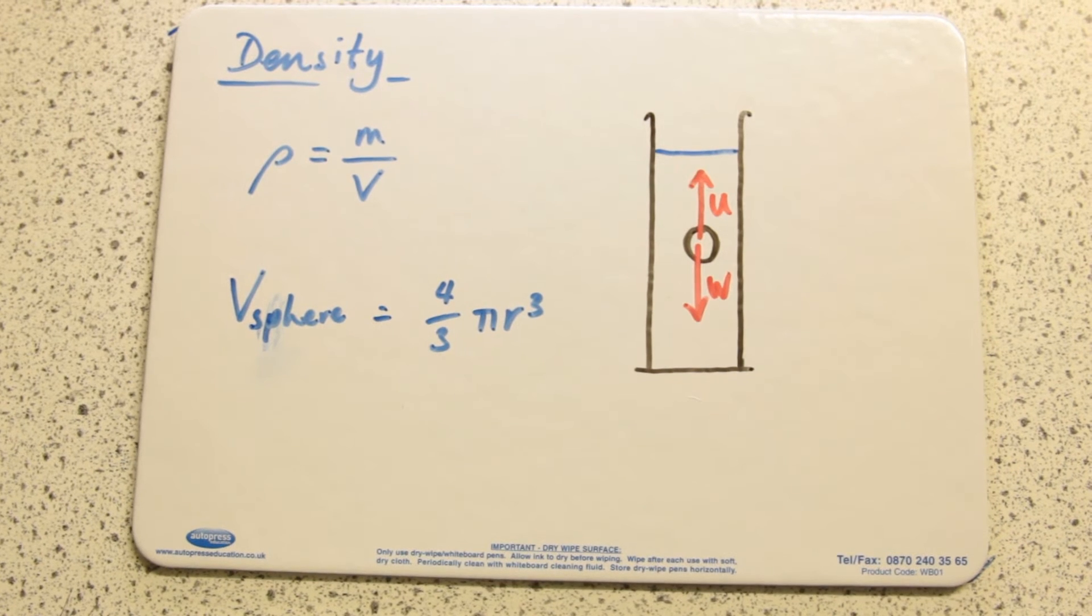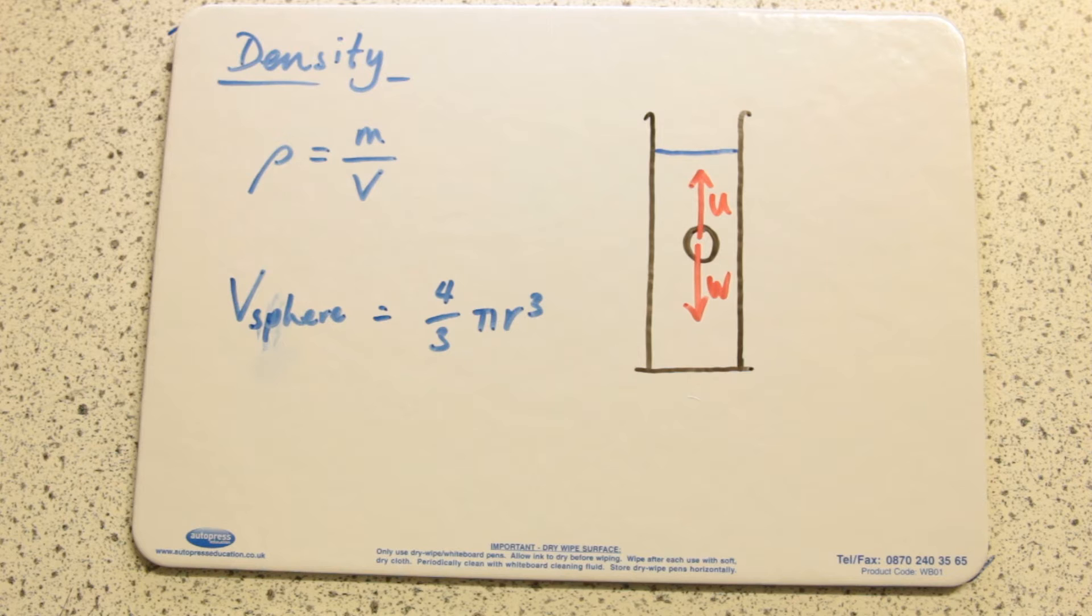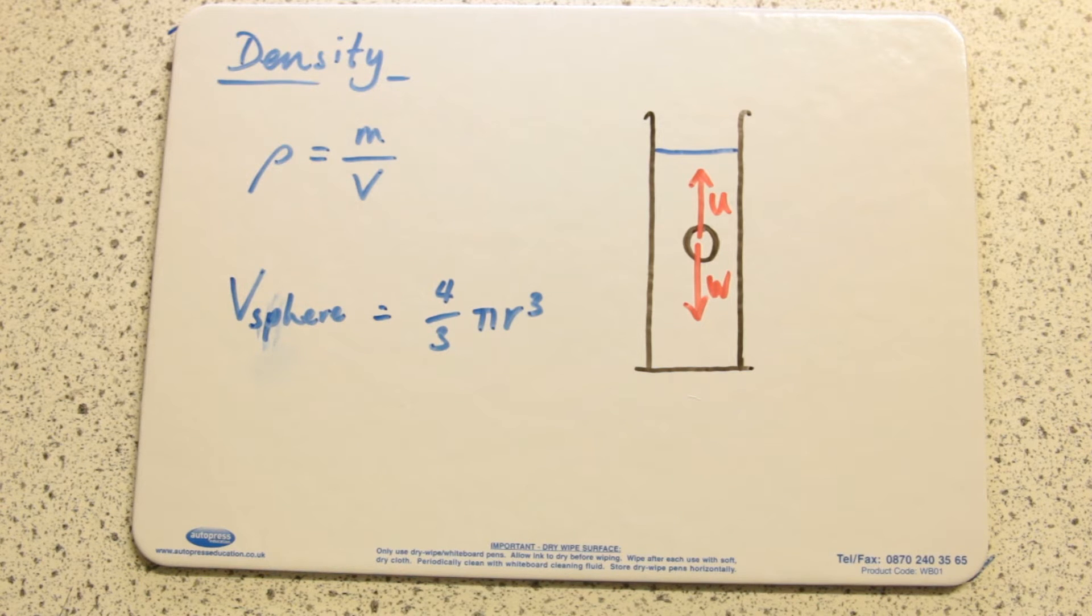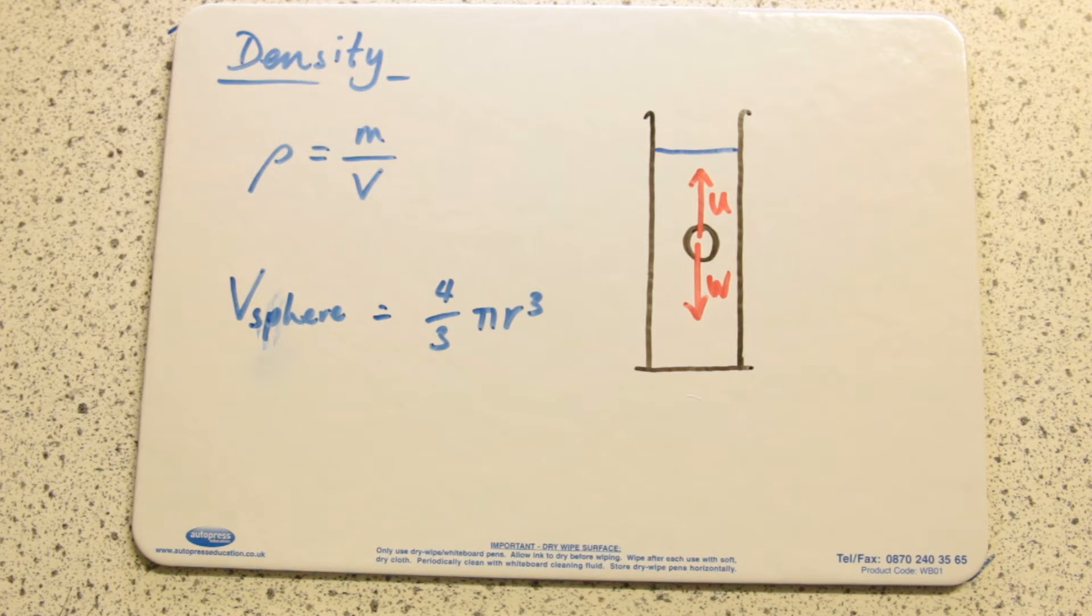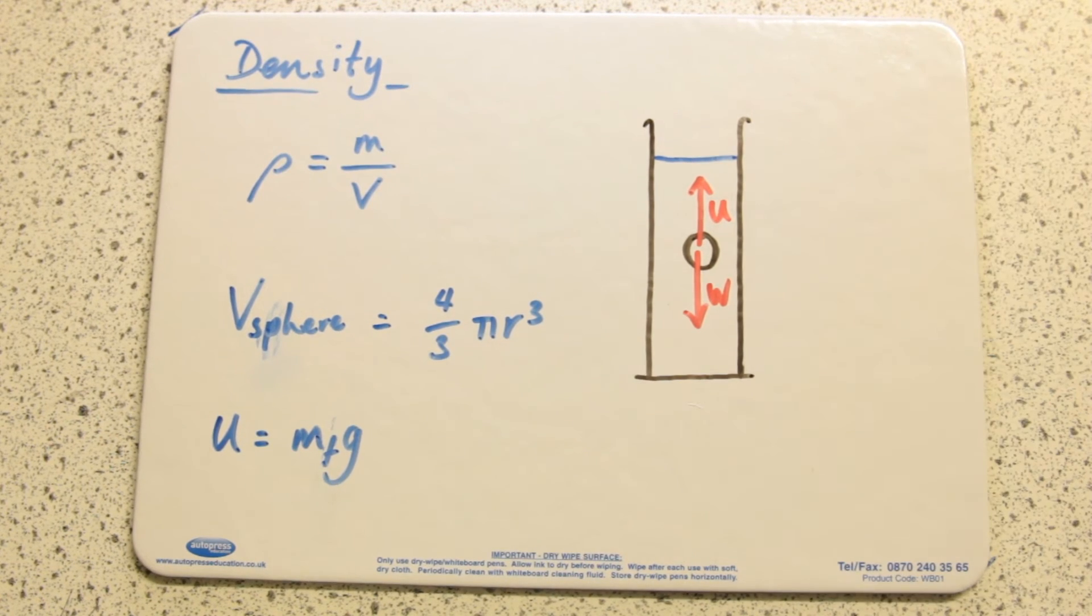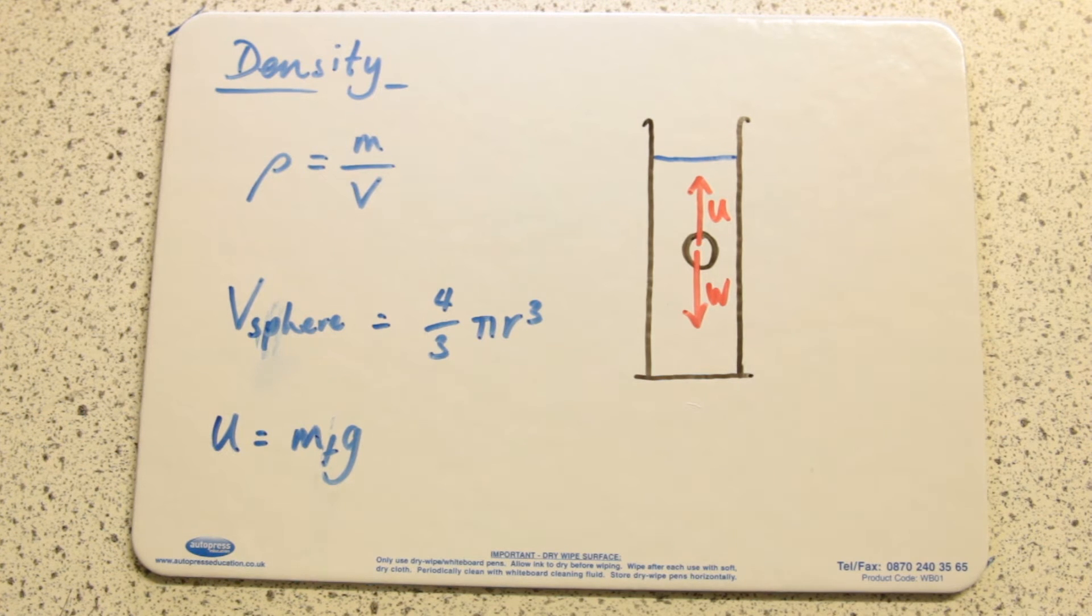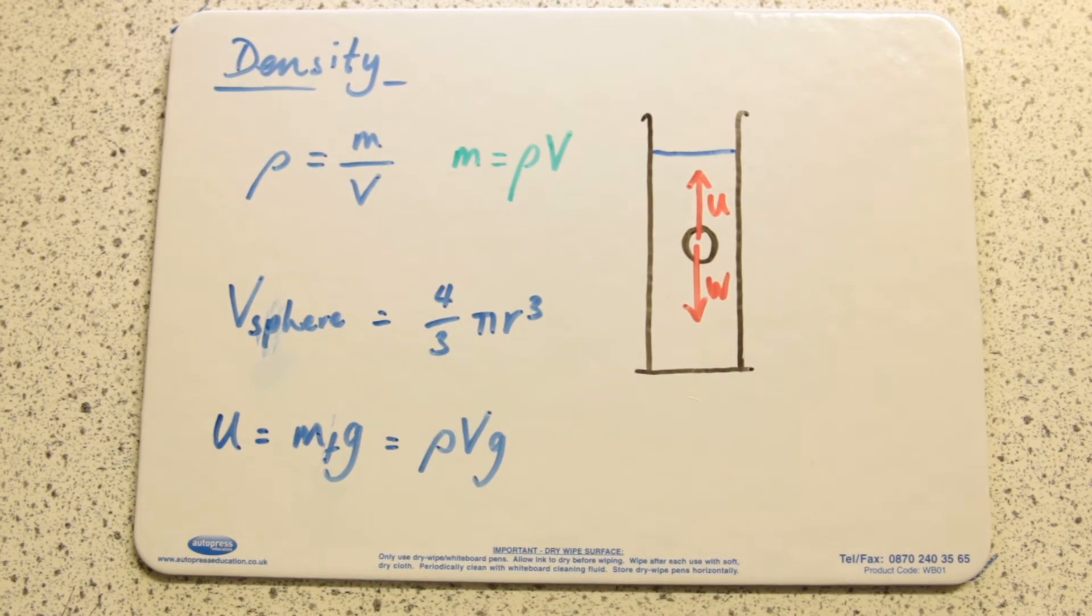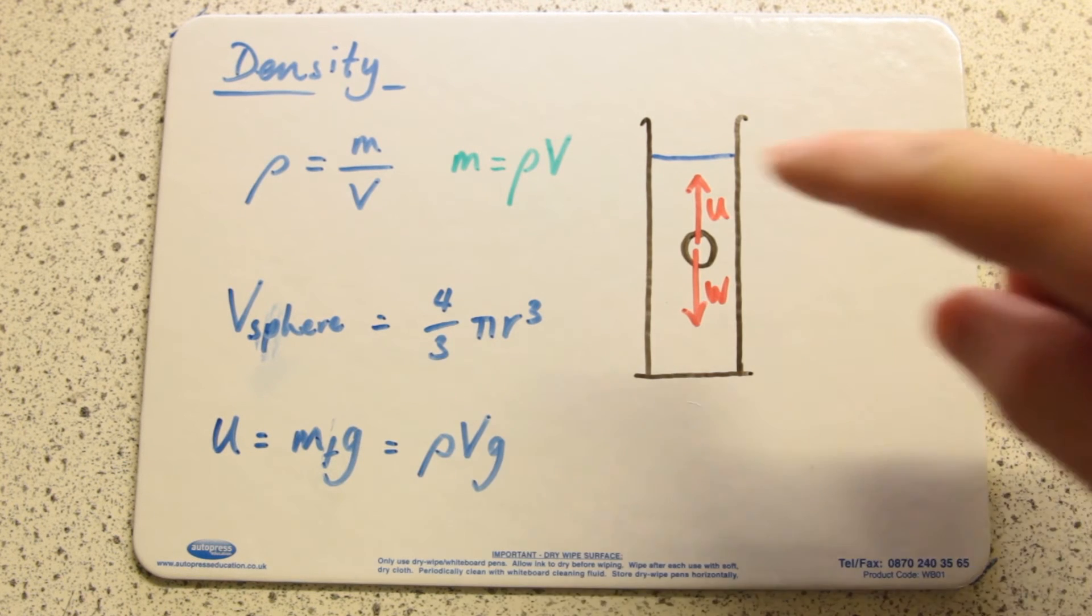Let's consider what that might be if it's just floating there suspended. In this simple case, the weight is equal to the upthrust. Archimedes principle tells us that the upthrust is equal to the weight of fluid displaced. So let's calculate the weight of fluid displaced.